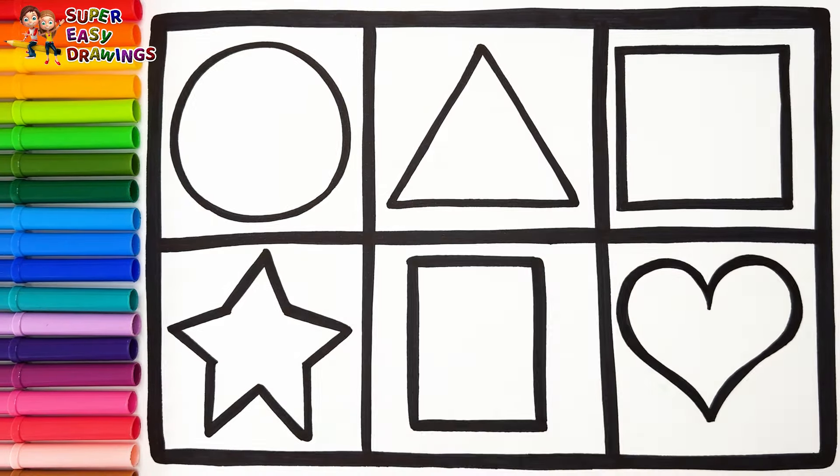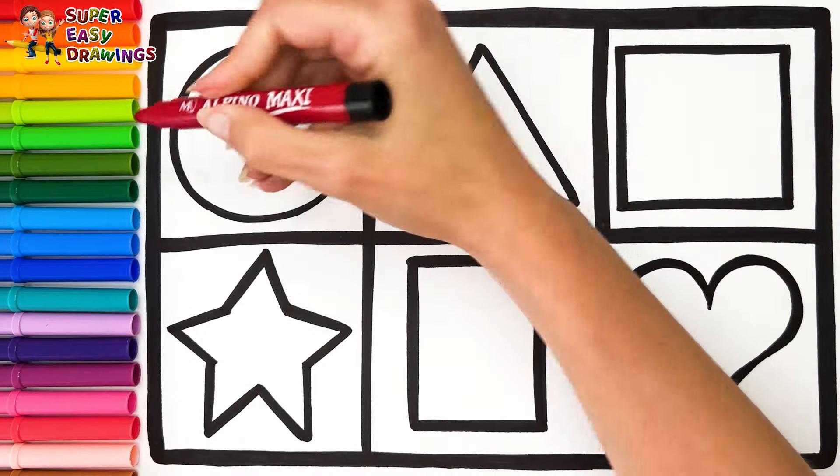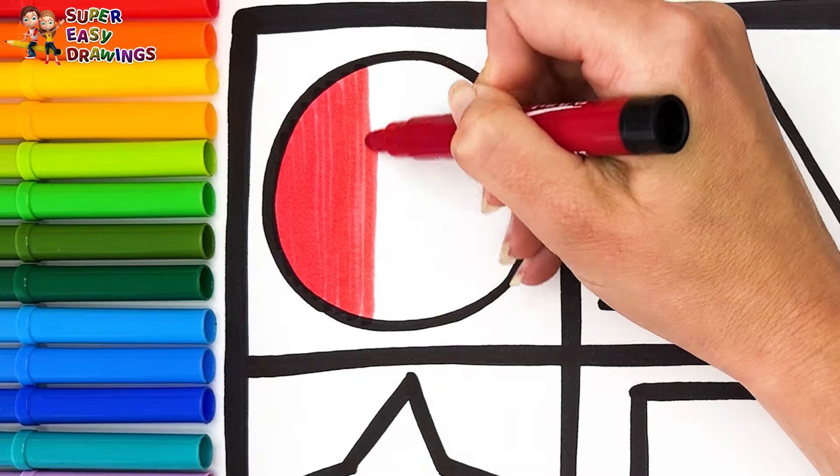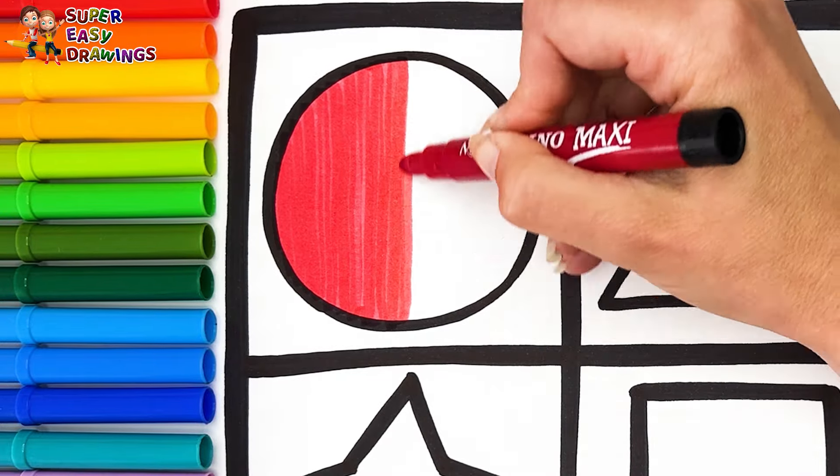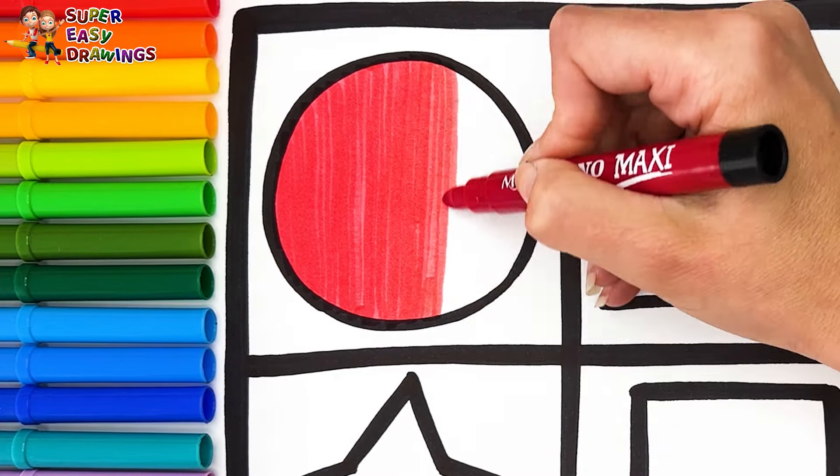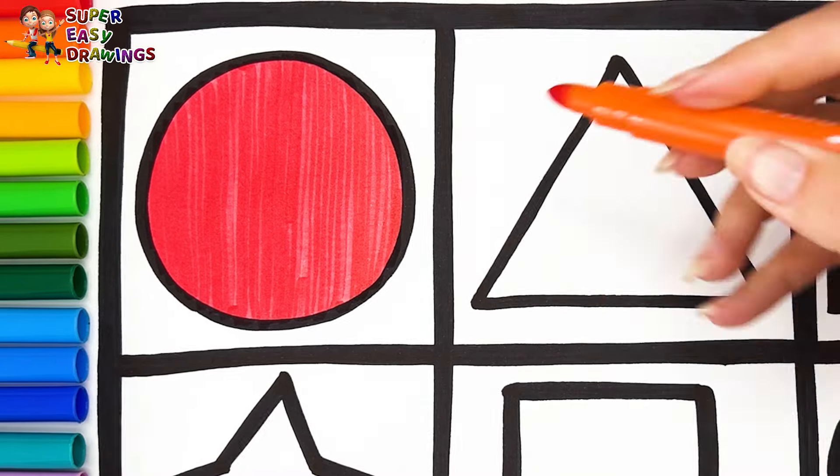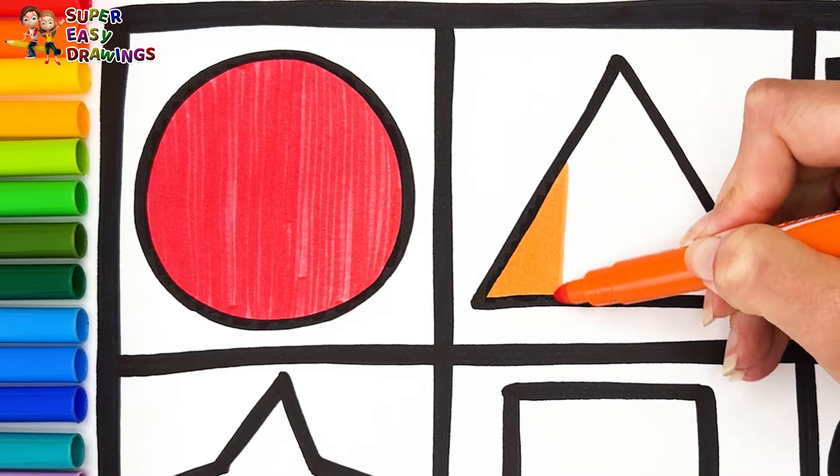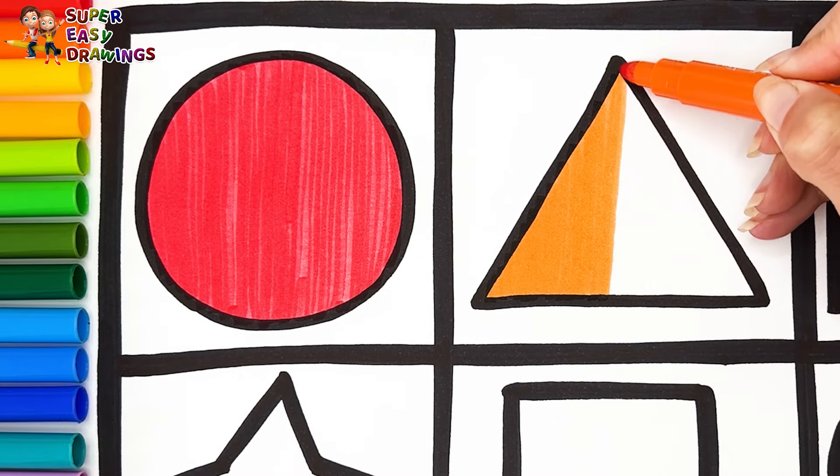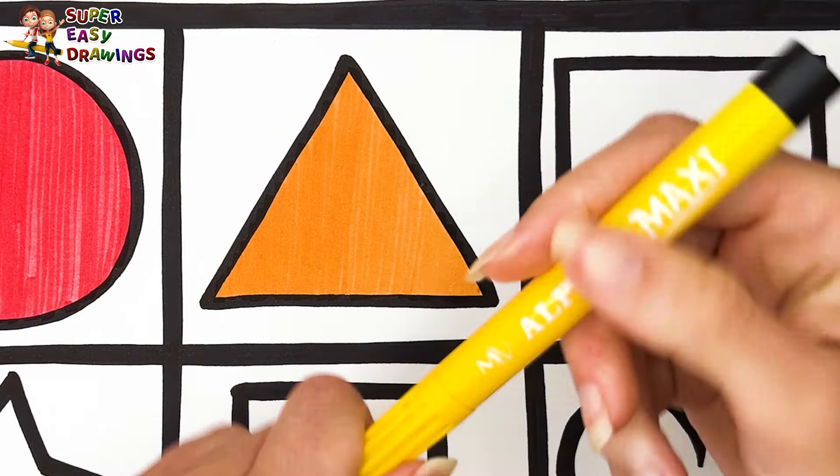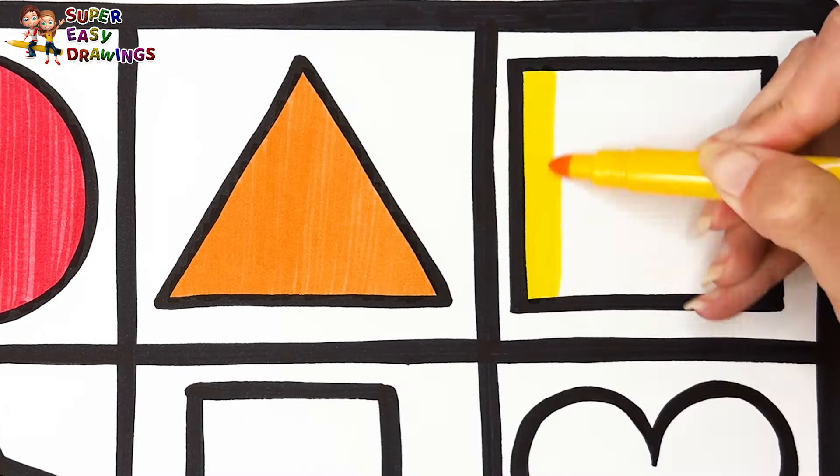Let's start coloring. To color our cute shapes I'm going to use the colors of the rainbow. Red for the circle. I use orange for the triangle. I colored the square with yellow.